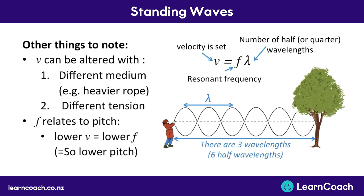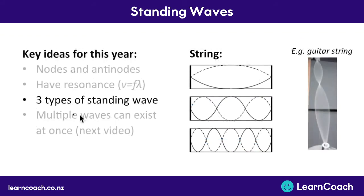You can also alter the velocity by changing the medium — a heavier rope would slow the wave speed down, or a lighter rope would speed it up. Alternatively you can change the tension, like a guitar or piano string; increasing tension increases the frequency because it changes the wave speed. The frequency relates to pitch: a higher pitch means a higher frequency and a lower pitch means a lower frequency. If you increase the velocity by increasing tension or using a lighter rope you'll increase the frequency and hear a higher pitch sound. This is called resonance.